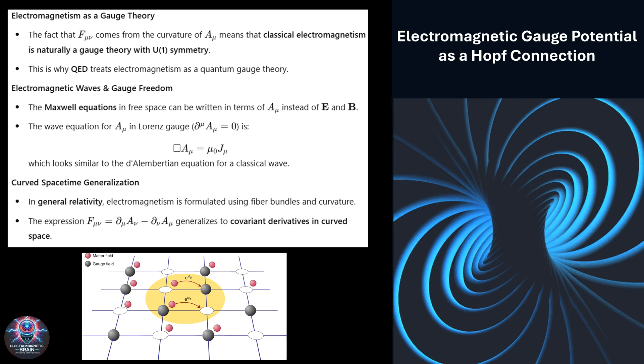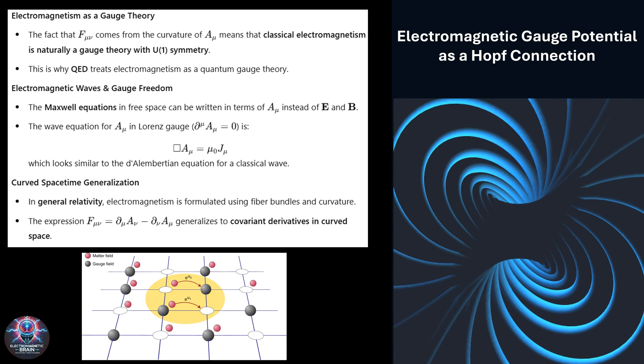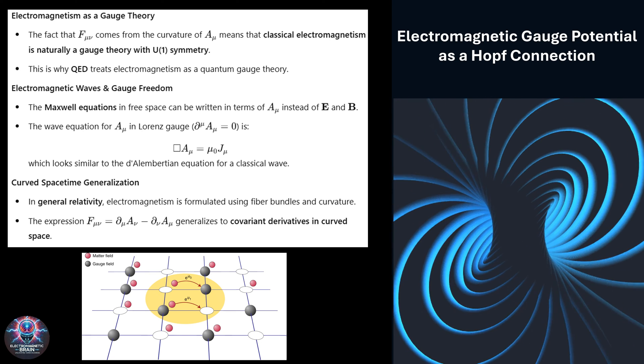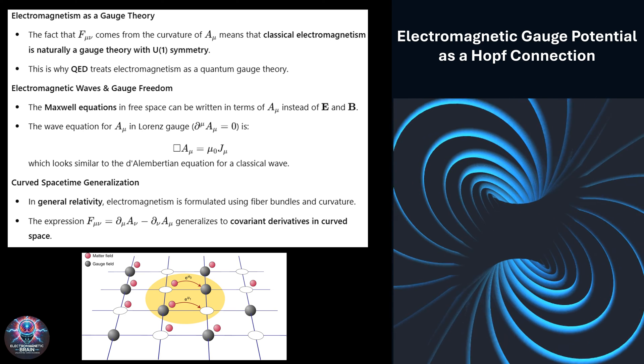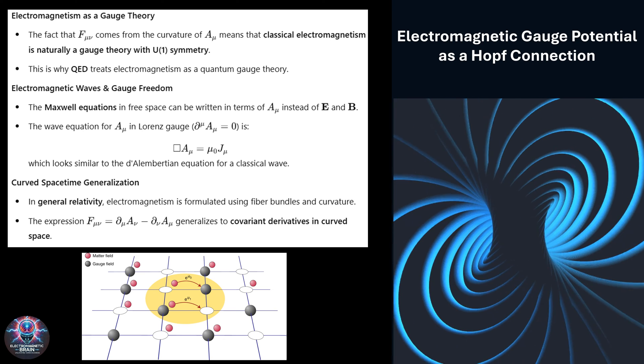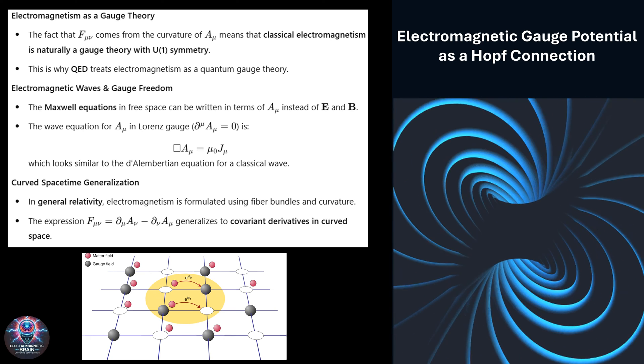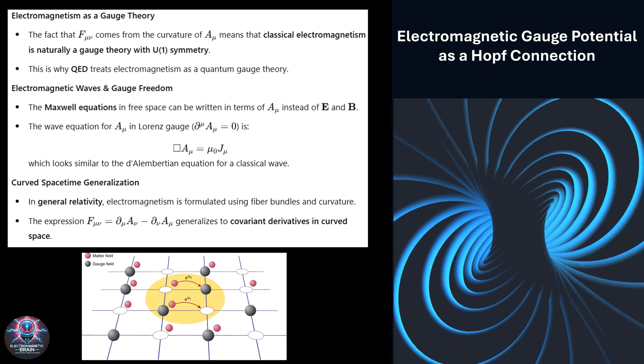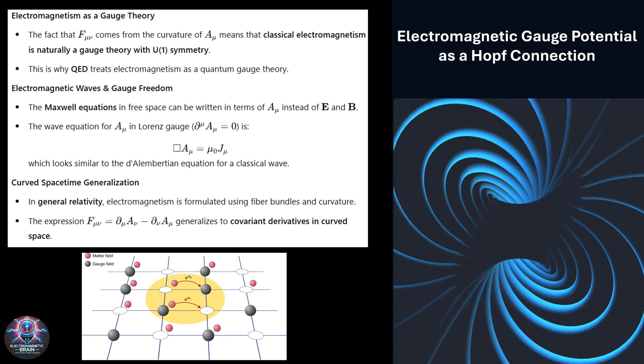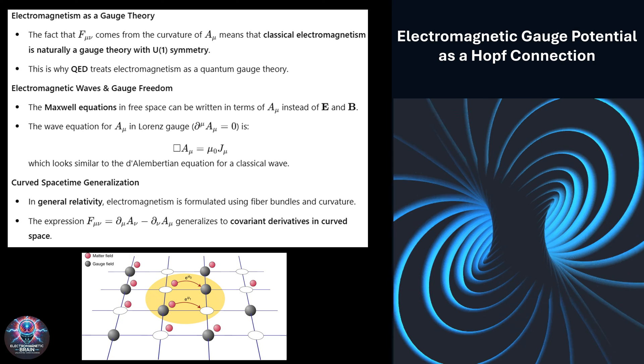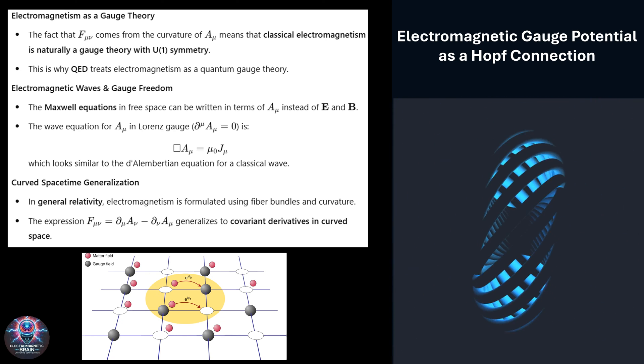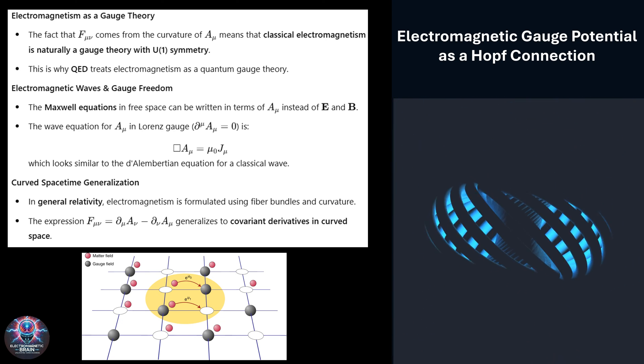One of the most powerful aspects of gauge theory is the idea of gauge transformations, changes in the potential that leave the physics unchanged. Specifically, we can transform the potential as A mu to A mu plus D mu lambda, and everything still works the same way. This redundancy is not a flaw, but rather a deep feature of nature that ensures local gauge invariance, a core principle in modern physics.